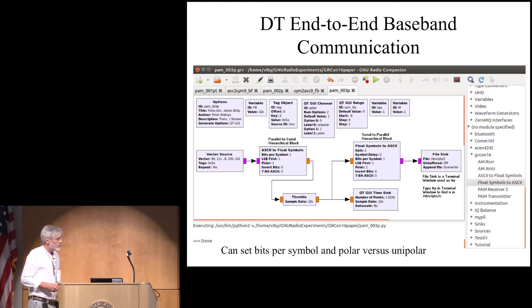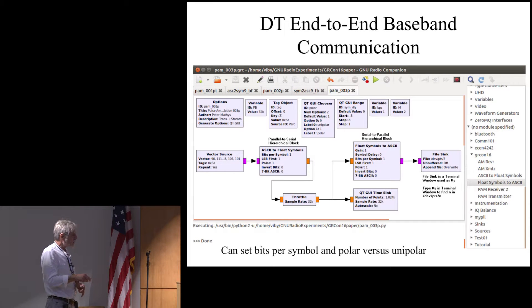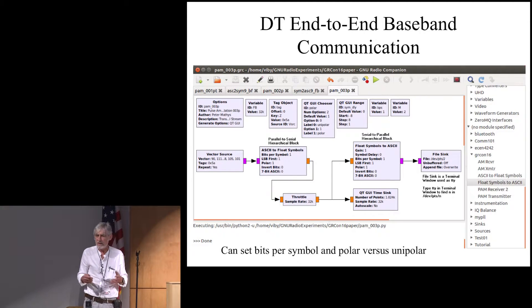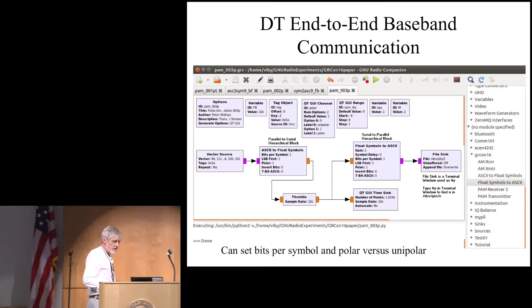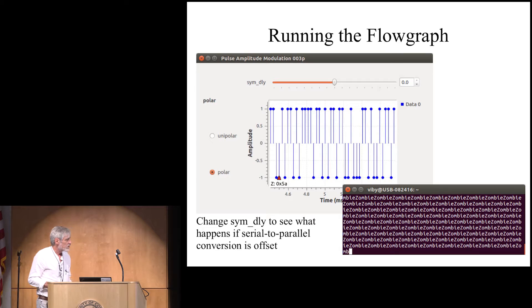Okay, and so at this point we have an end to end discrete time communication system where we have our vector source with the text. We have the ASCII to float symbol conversion and then at the receiving end we do the float symbol to ASCII conversion. So that's another one of those hierarchical blocks that just undoes what this one here is doing. And then we can go here in a file sync. And the file sync for that one I chose a TTY, a teletype terminal in Linux so that I can actually see the text.